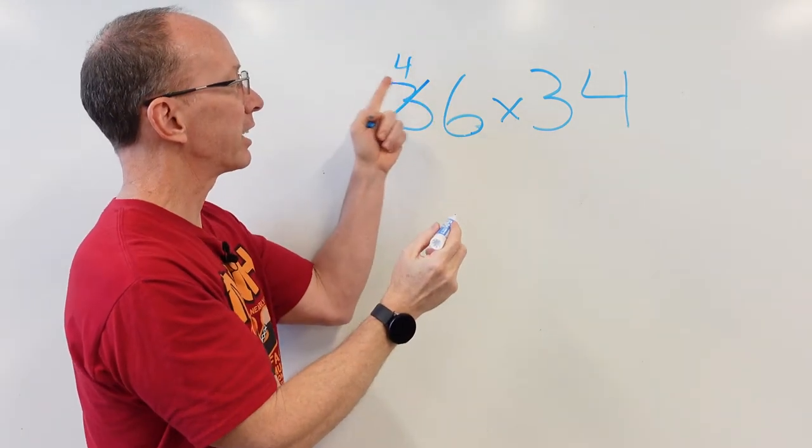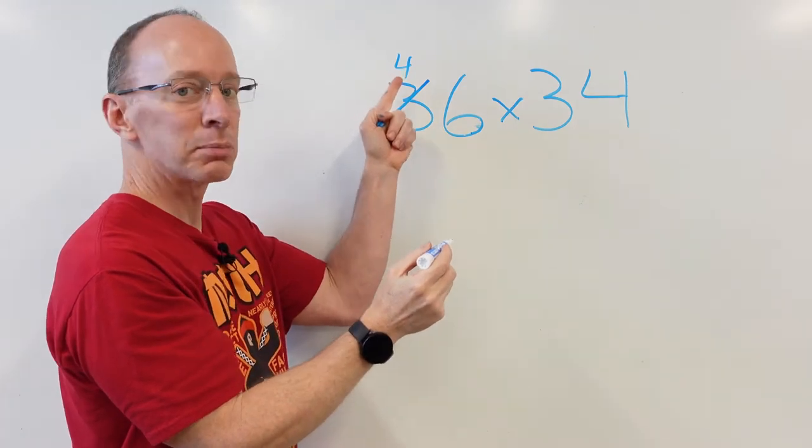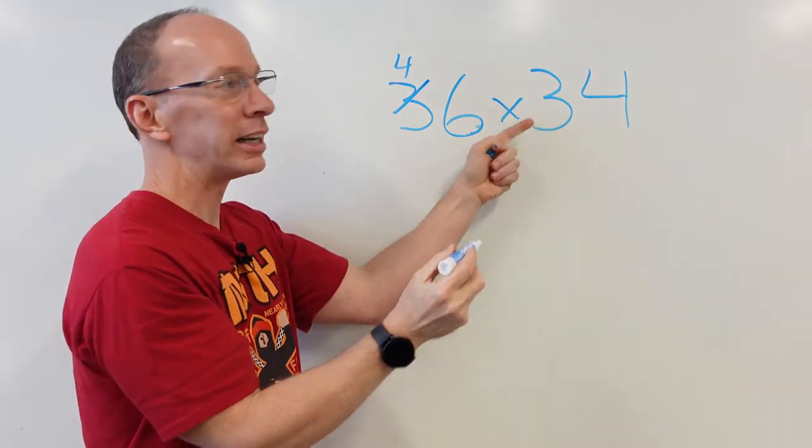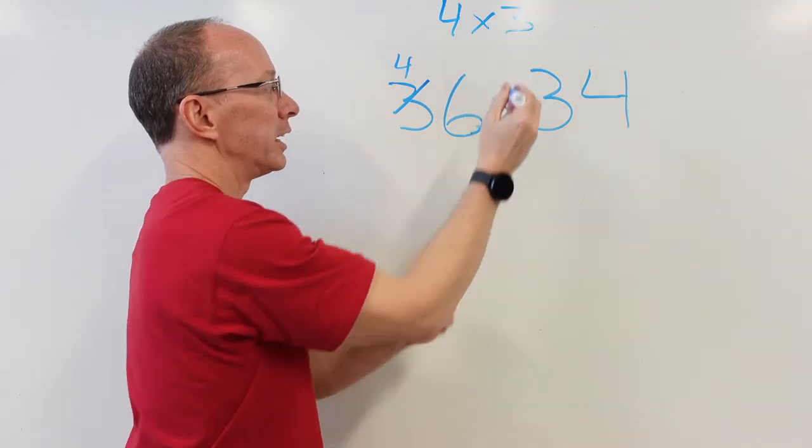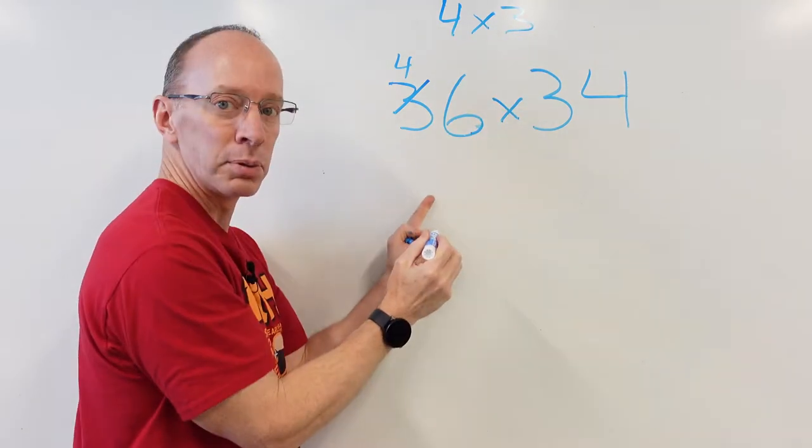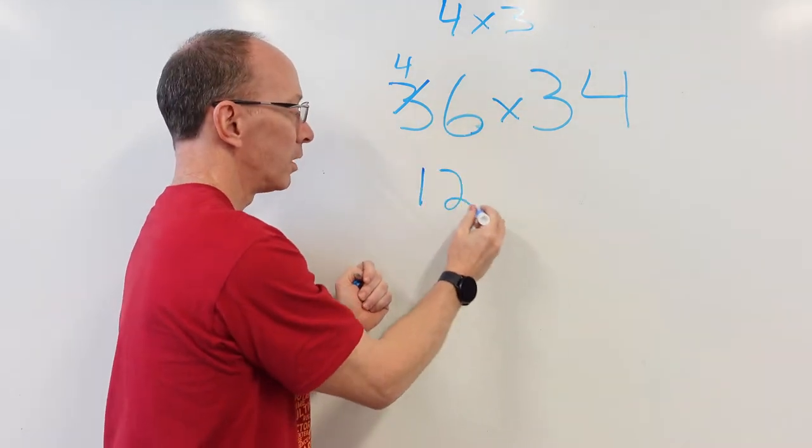Now, you're going to take this four right here and multiply it times the three. Four times three. And that answer you're going to put right here, twelve.